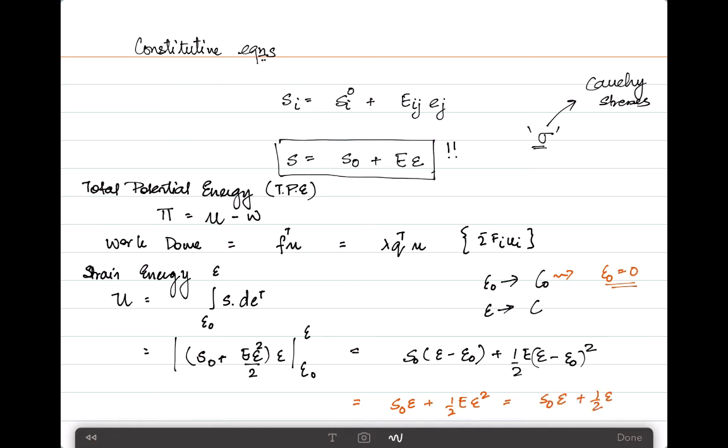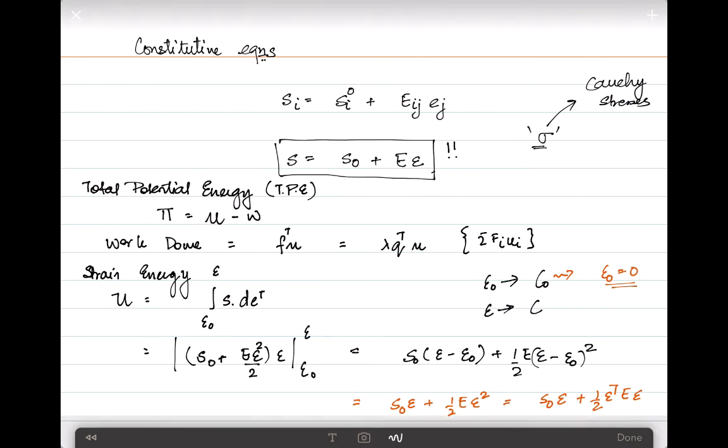In a vectorial format, we can write it as S naught epsilon plus half of epsilon transpose E epsilon. This will be the final total strain energy in the system. Subtracting the work done, we will get the total potential energy of the system. This, when differentiated with respect to the nodal displacements and rotations, will give us the final formulation for the finite element equilibrium equation.